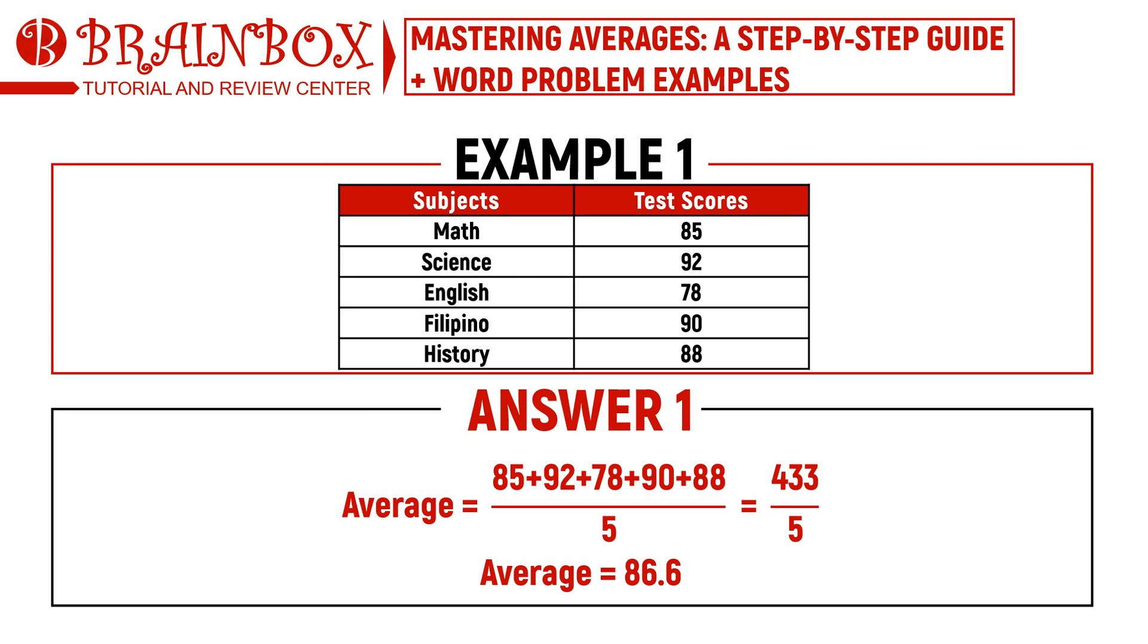The result is the mean average of your test scores. In this example, the sum of all the test scores is 433. We will then divide it by 5, giving us an average of 86.6 for all subjects.